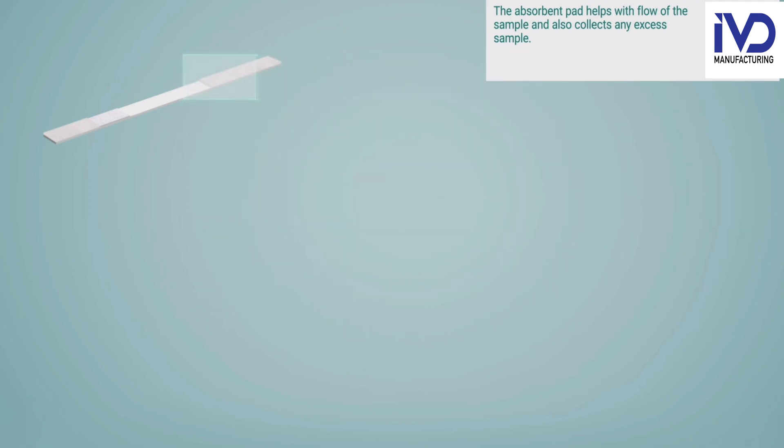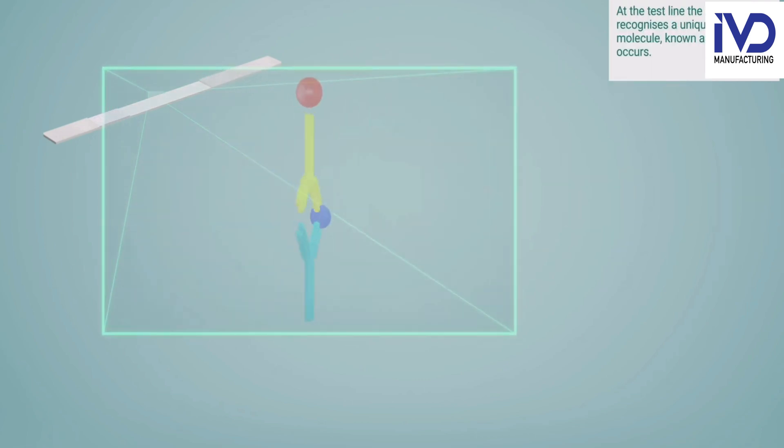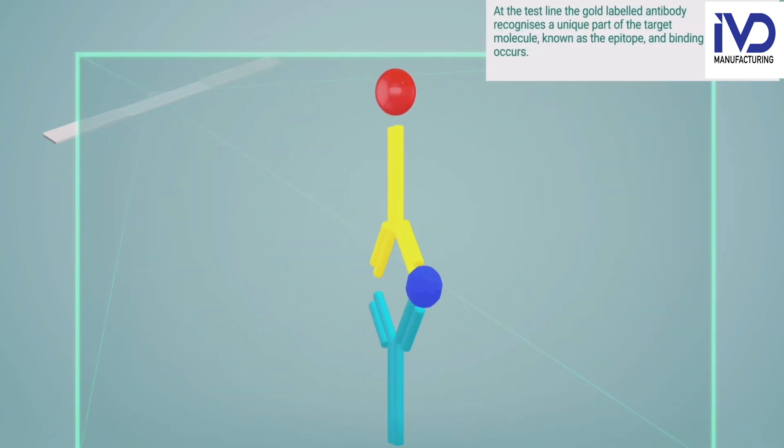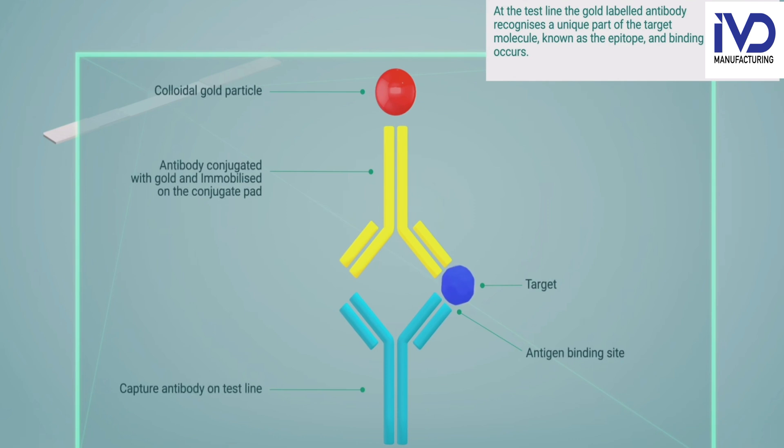Now friends, the time comes for result interpretation. Let's do one more microscopic view. As you can see, there were two antibodies: one was the captured antibody, the other was the detector antibody.